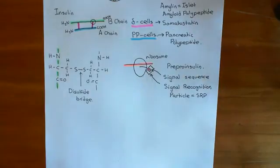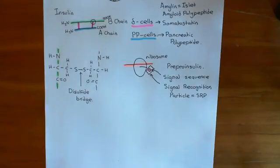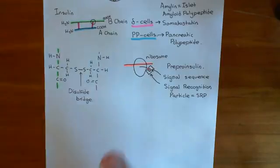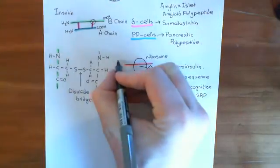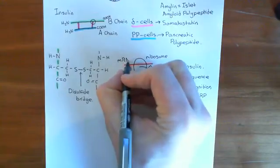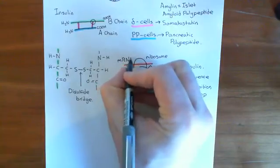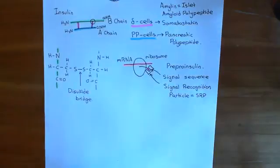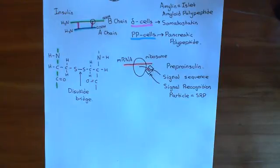The SRP will bind over the signal sequence, and what's going to happen is that translation is going to be temporarily halted. You're not going to make any more polypeptide — the mRNA has not been fully read yet and you have not synthesized the full pre-proinsulin — but at the moment, translation is halted and you'll continue it later.